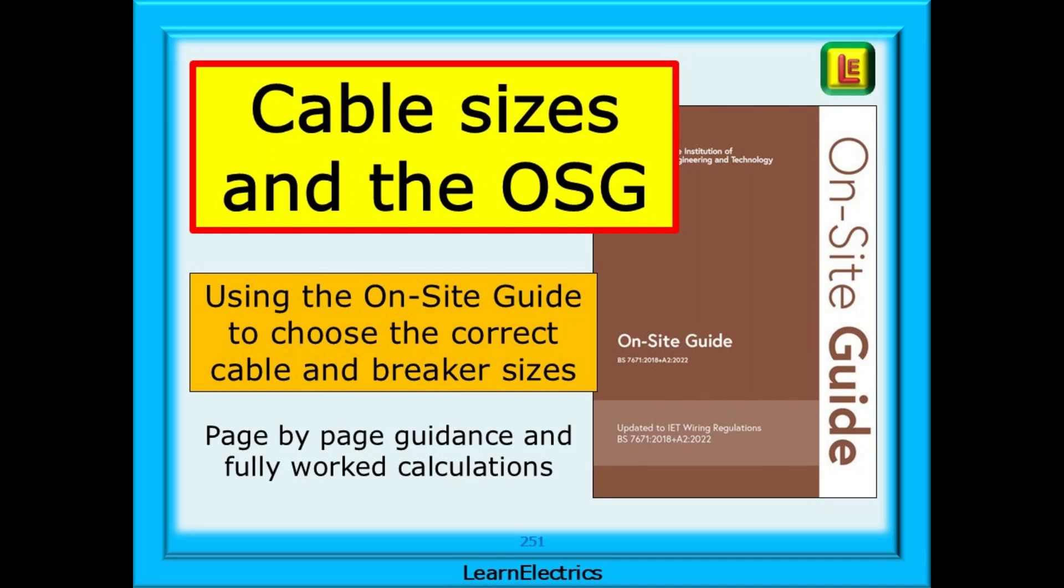Welcome to this video on cable size selection and the on-site guide from Learn Electrics. This video and the page numbers used are specific to the Brown Amendment 2 on-site guide with just one exception from the Brown Wiring Regulations book. Although Amendment 3 is now released, Amendment 3 is a ten-page add-on pack attached to Amendment 2, so the Amendment 2 books are still valid.